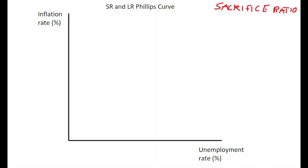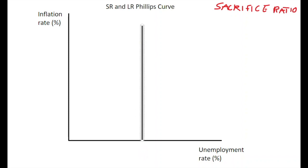We'll start off with our vertical long-run Phillips Curve. We have the long-run Phillips Curve here, which is a vertical line showing no trade-off between inflation and unemployment in the long run.